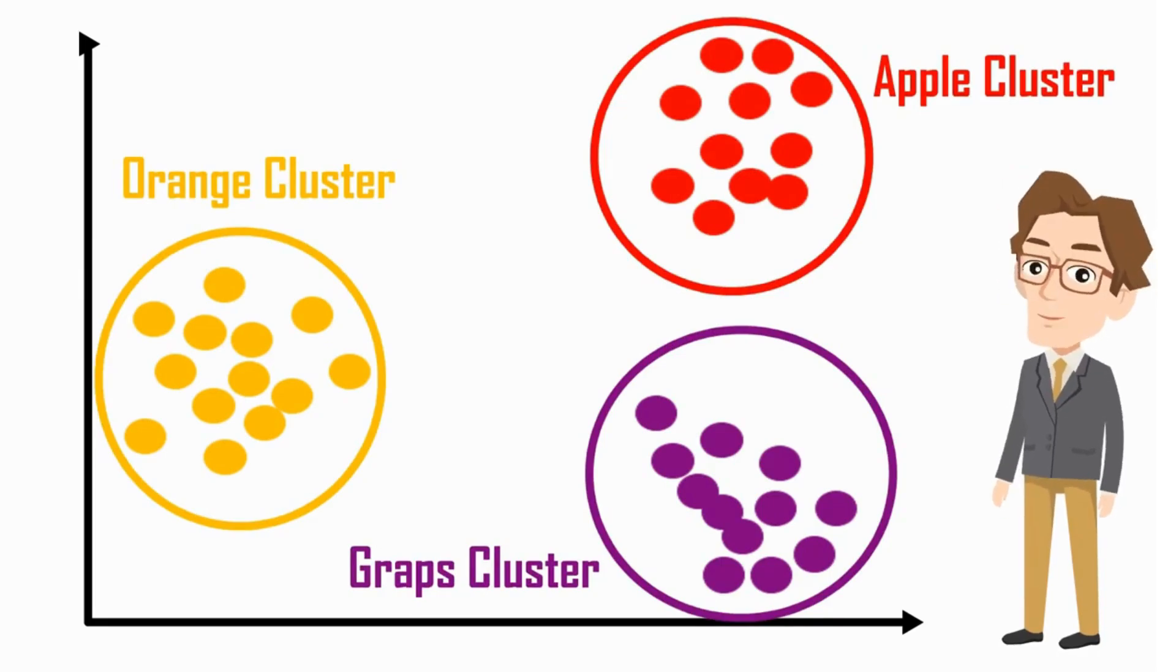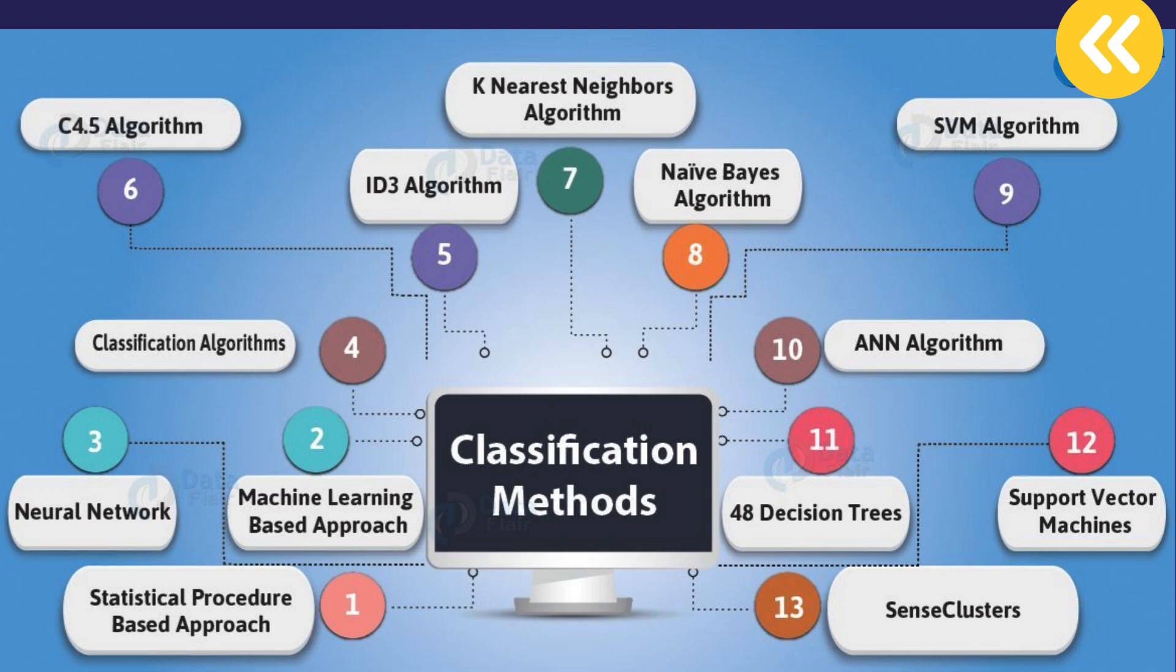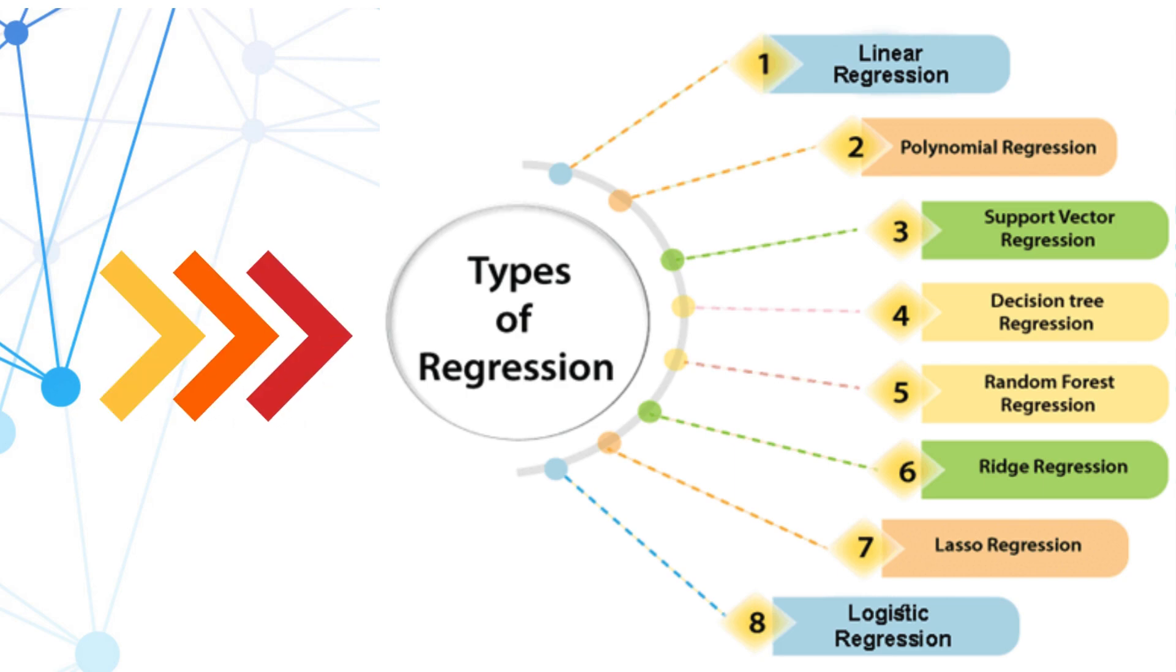Some of the classification and regression model algorithms are listed here. Understanding the differences between regression versus classification algorithms is crucial for data scientists to solve market issues effectively. Accurate data predictions rely heavily on selecting the right models, ensuring high precision in the results.